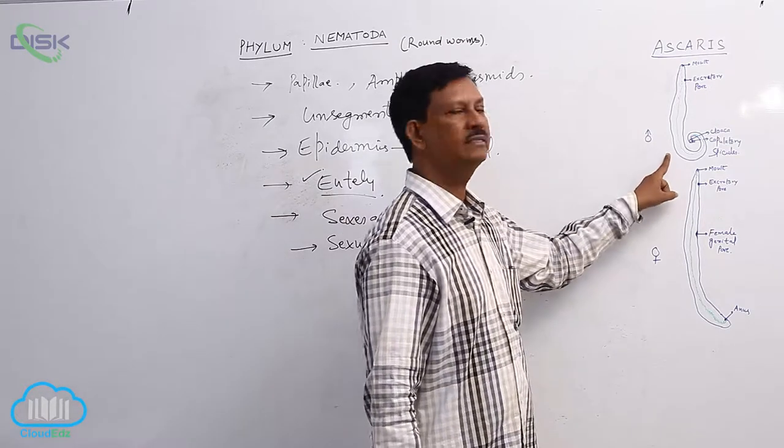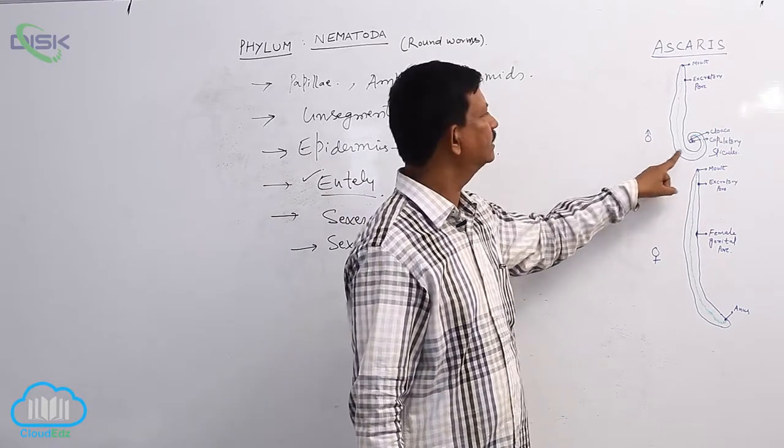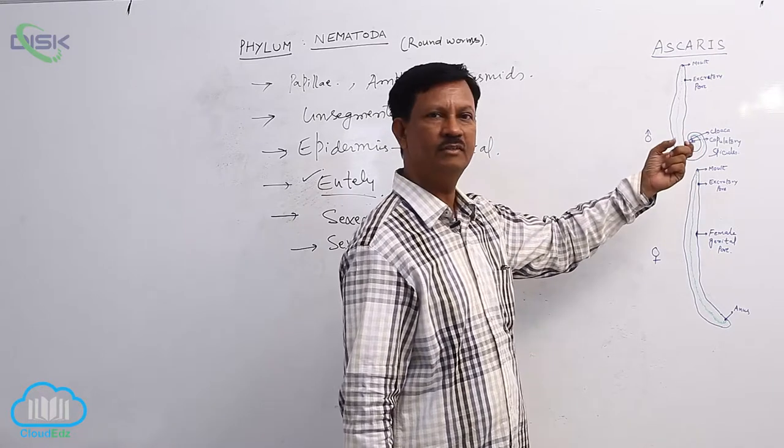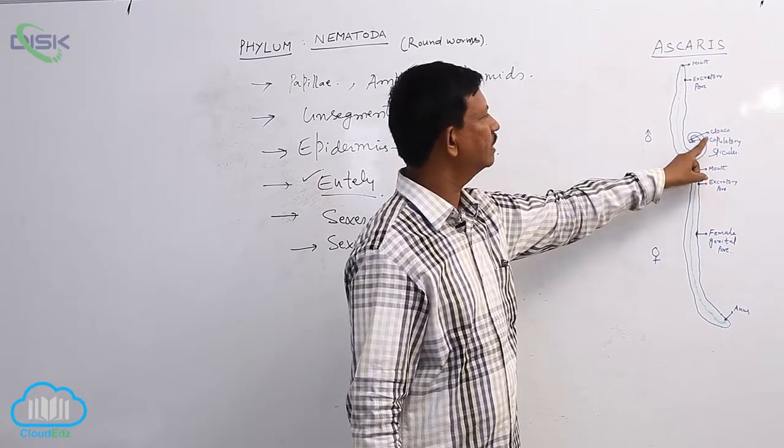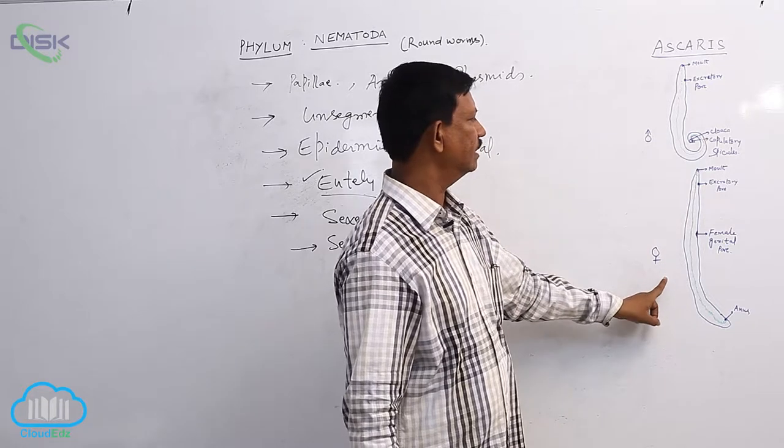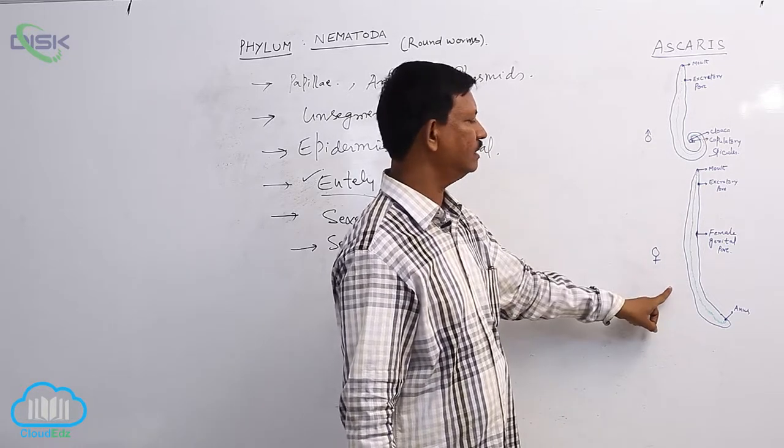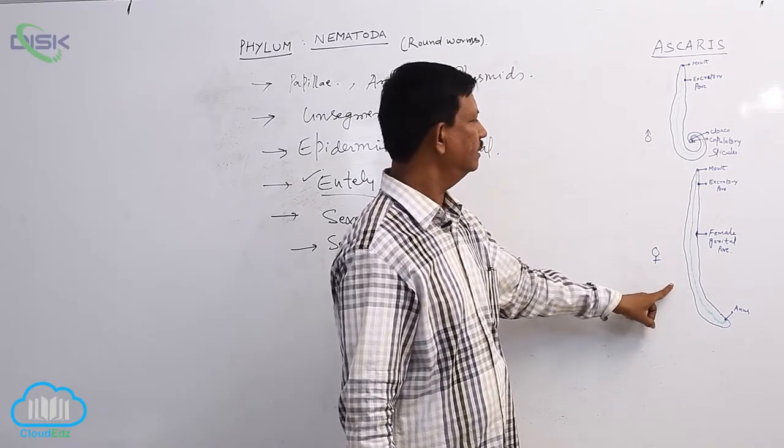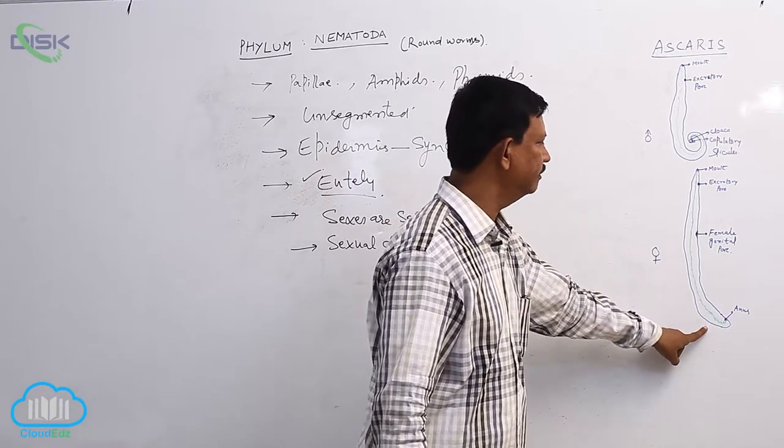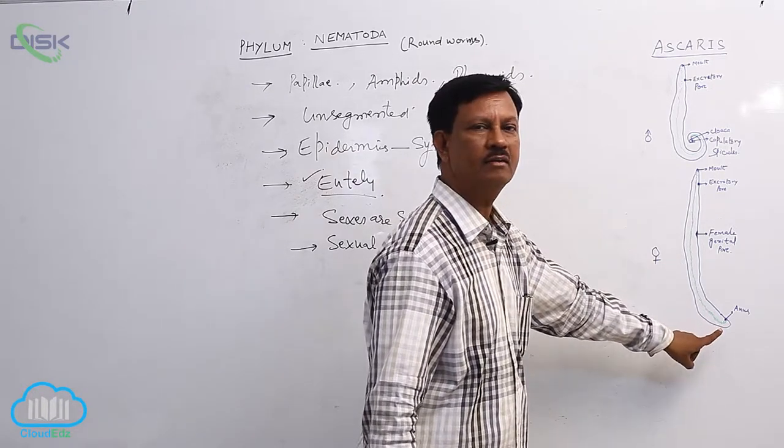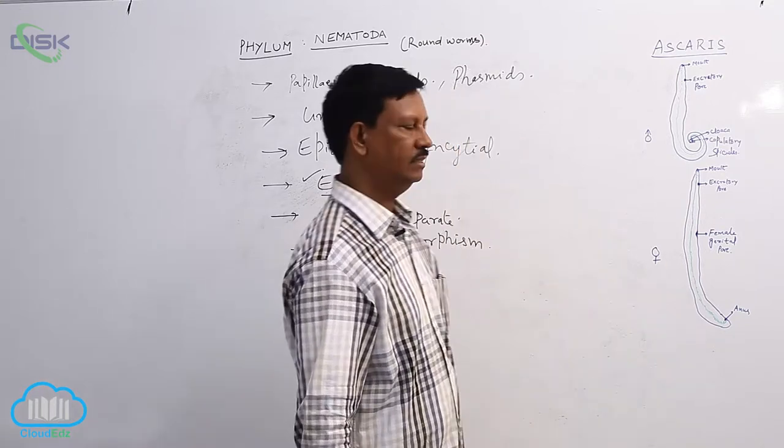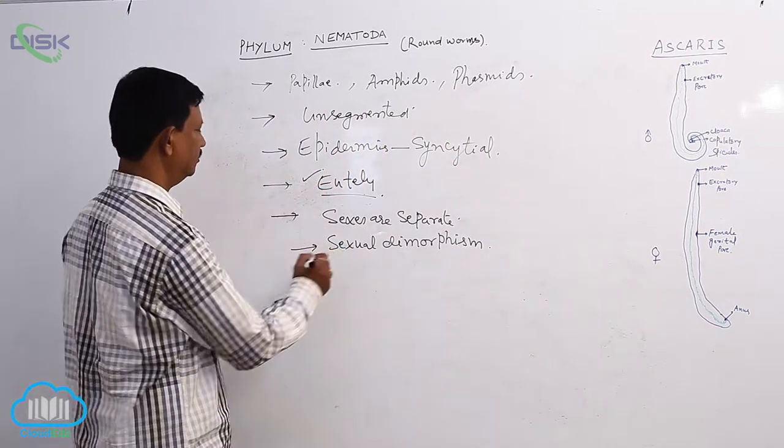Generally, males are smaller and its posterior end is curved, and copulatory spicules one or two pairs are present here. Females are, when compared to males, longer and larger, and posterior end is not curved. No copulatory organs are present in female animal. This is the sexual dimorphism.